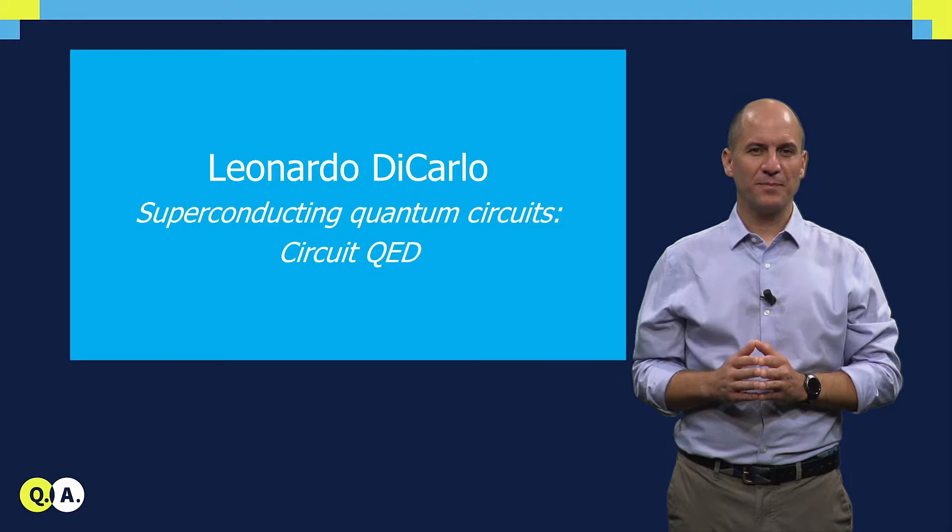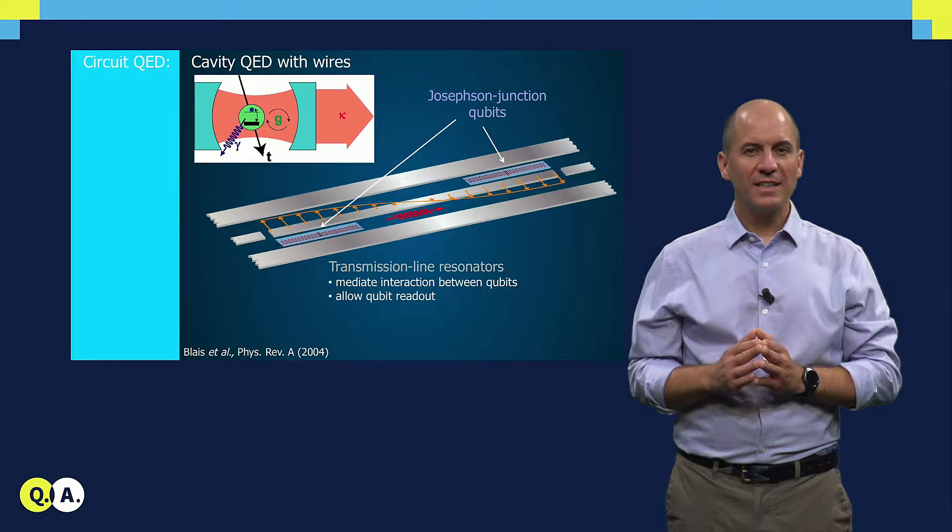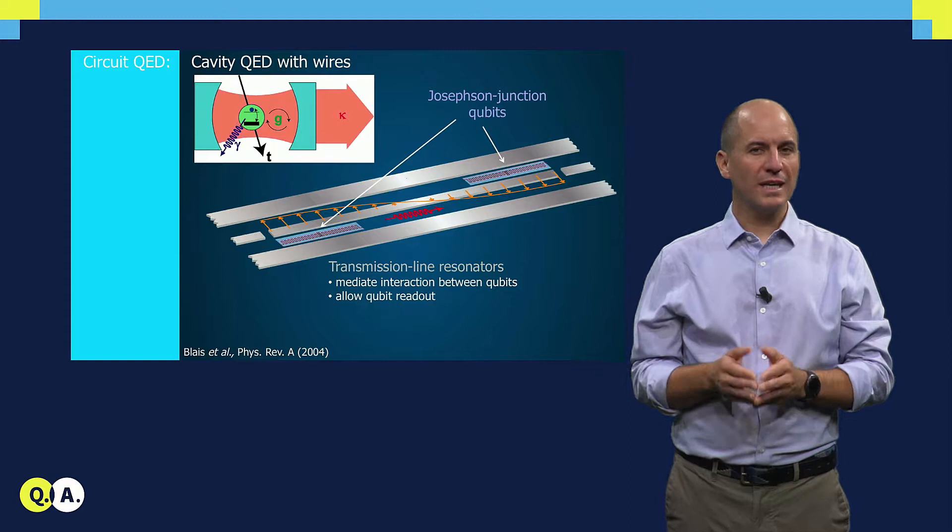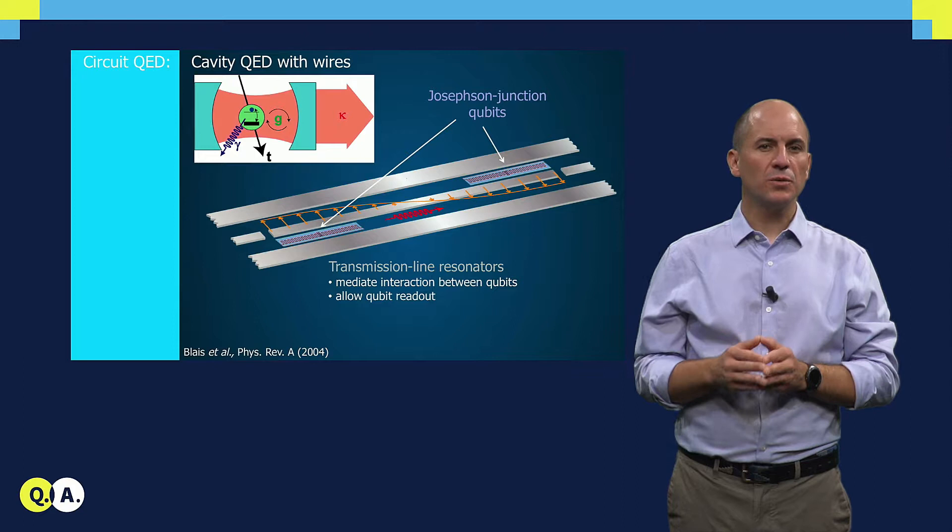Today we will add the remaining ingredients that we need to perform qubit readout and two qubit gates. These ingredients are transmission line resonators. The resulting architecture for quantum hardware combining qubits and resonators goes by the name of circuit quantum electrodynamics or circuit QED.